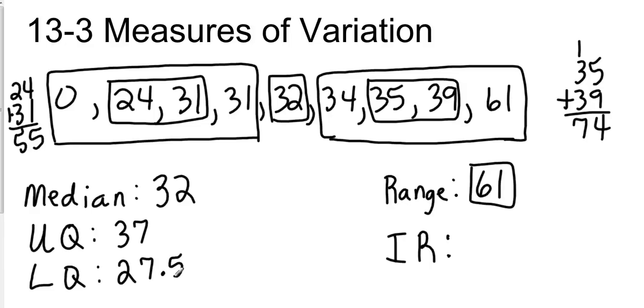Well, if some of you are thinking, well, we just take the biggest quartile minus the smallest quartile, you are absolutely right. So we take upper quartile of 37 minus the lower quartile of 27.5. And that's going to give us a range of 9.5.